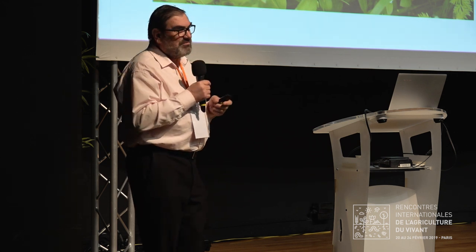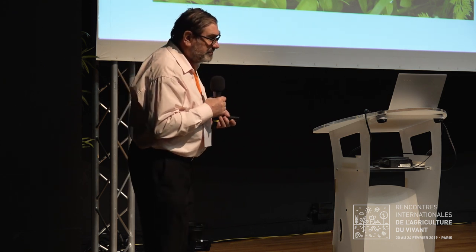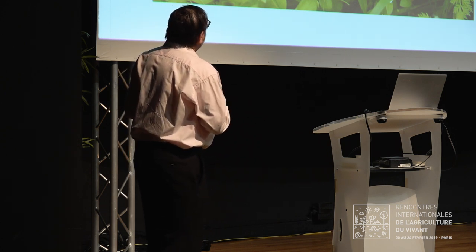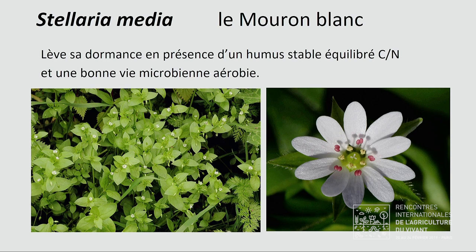J'ai fait un diagramme de la colonisation des sols par rapport aux plantes qui poussent. La plante au sommet de la pyramide se trouve dans la zone où il y a 4 à 5 % de matières organiques dans le sol, des matières organiques assez solubles. Quand il y a minéralisation et nitrification, ça va lever la dormance de cette espèce dont le rôle dans la nature est de réorganiser l'azote, de la mettre sous forme organique non lessivable. C'est le mouron blanc — et pour les gourmets, ça fait une excellente salade.